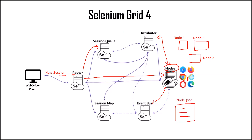When we register a node, we provide a JSON file describing node capabilities, and this information is passed to the distributor as part of the registration process. We also need to provide the path of the browser driver binaries; if not provided, it will pick from the path variable by default. The role of the node is to run tests on browsers. We can create multiple nodes to support cross-browser and cross-platform testing — we can attach Mac, Linux, or Windows machines as nodes in a single Selenium Grid.